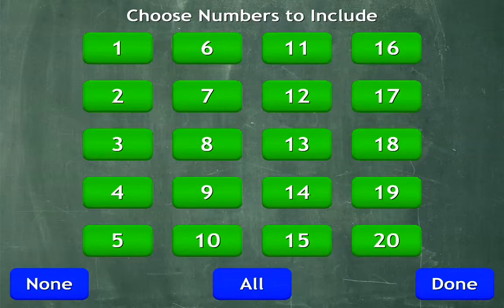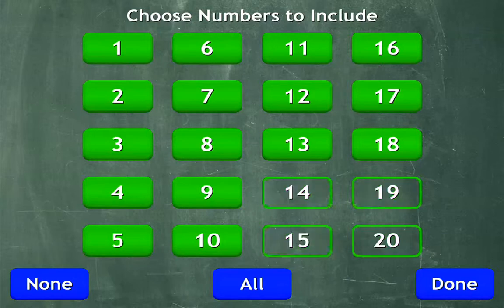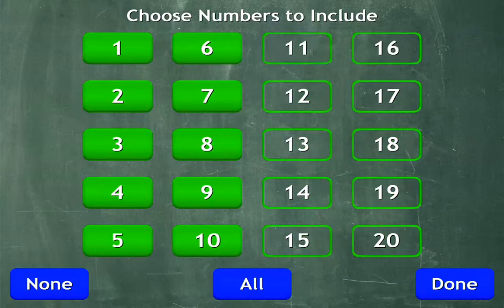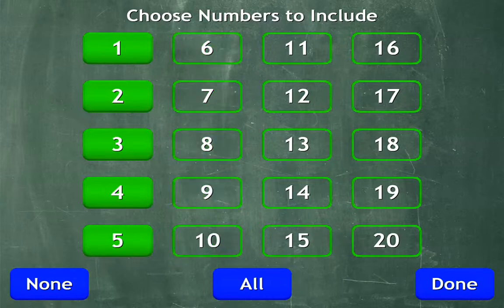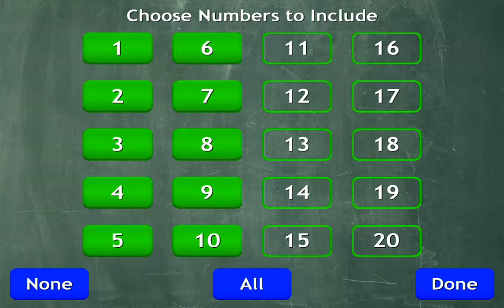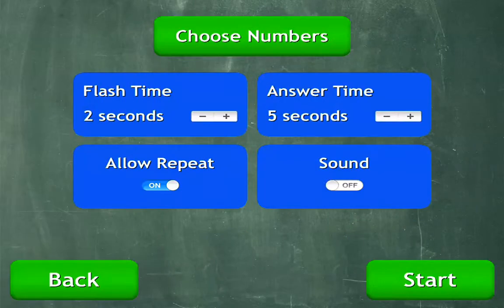For students who are subitizing to 20, or we could just do up to 10 for students who are subitizing to 10, and just up to 5 for students who are subitizing to 5. Let's go ahead and do up to 10 for right now. I'm done selecting my numbers. I can also adjust how long I want the student to see the image.